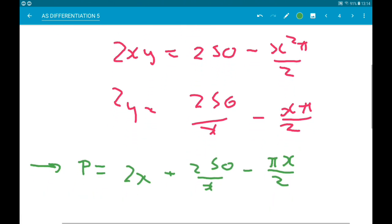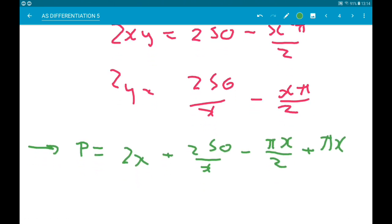Ok, now we know that that must equal 250. Now in our perimeter we have a 2y, so from the area we just need to get 2y on its own. So we get 2xy is equal to 250 minus x²π over 2. And then we divide through by x and we get 2y is 250 over x minus xπ over 2. Substitute that into our perimeter. So our perimeter is 2x, and it was add 2y, so that's add 250 over x minus πx over 2, and then add πx. So there we have 2x, πx minus πx over 2, so that's πx over 2, which is what we were trying to show.